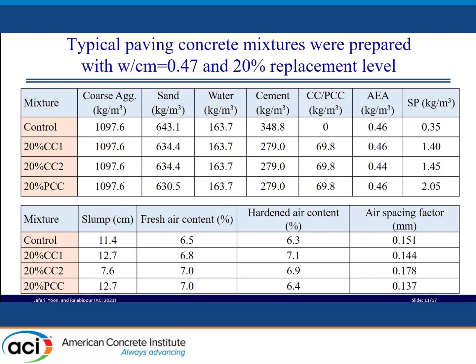The effect of replacing 20 percent of cement with calcined clays on properties of concrete is reported in the table. Calcined clay mixtures required significantly higher superplasticizer dosage compared to the control to achieve the target slump. Also, as we go to clays that have higher kaolinite content, the superplasticizer demand tends to increase. Air content in fresh and hardened state concrete were almost similar among all mixtures and were achieved using almost the same air-entraining agent dosages. In addition, the air-void spacing factor was below the limit of 0.200 mm, indicating adequate freeze-thaw durability for all mixtures.